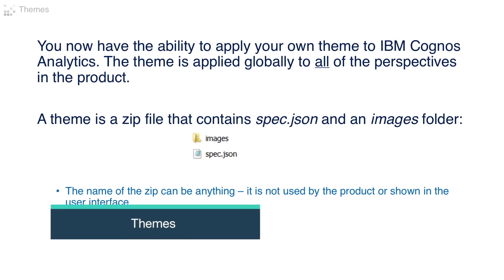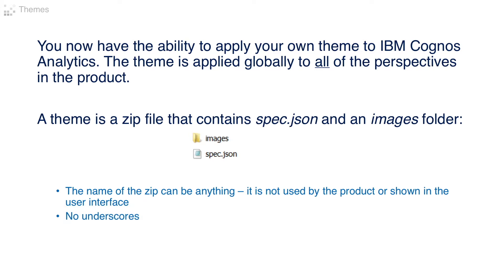You now have the ability to apply your own theme to IBM Cognos Analytics. The theme is applied globally to all of the perspectives in the product. A theme is a zip file that contains spec.json and an images folder. The name of the zip can be anything, because it is not used by the product or shown in the user interface. However, you can't use underscores in the name.